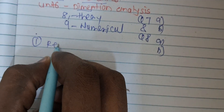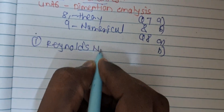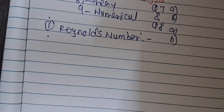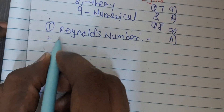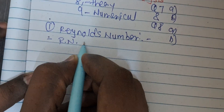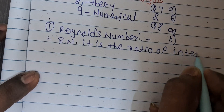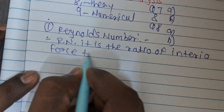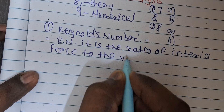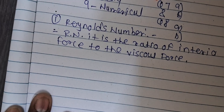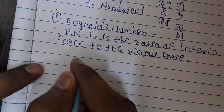The first definition is Reynolds number. For each definition we will cover: the definition itself, the related formula, how it is denoted, and the application or example where it is used. The Reynolds number is the ratio of inertia force to the viscous force.